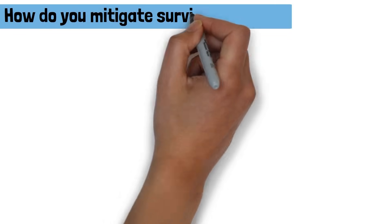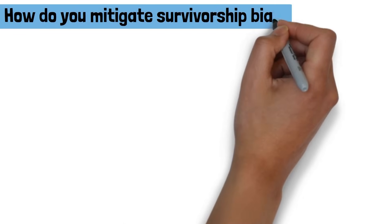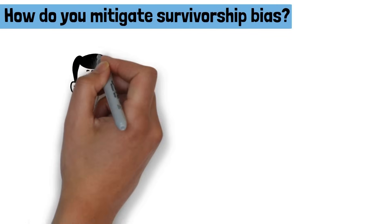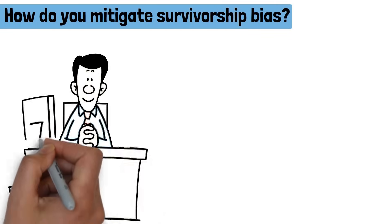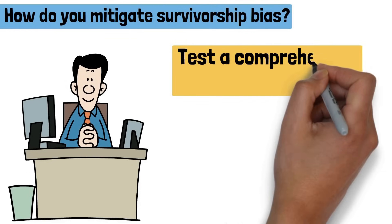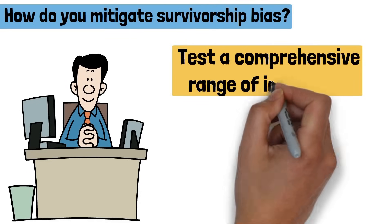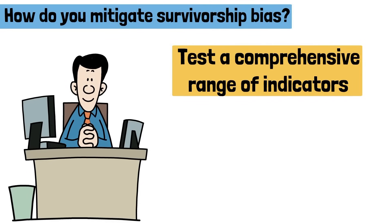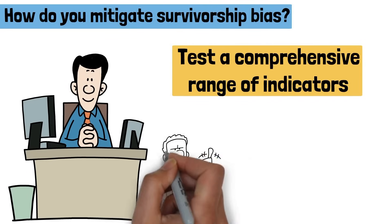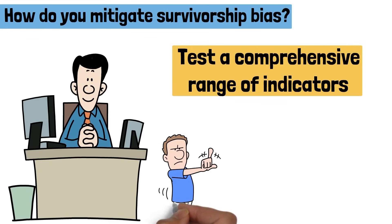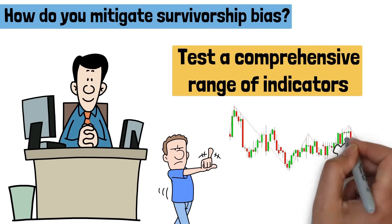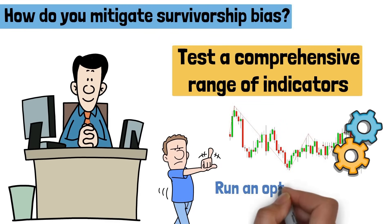How do you mitigate survivorship bias? Here are practical steps to mitigate survivorship bias in your backtesting. Test a comprehensive range of indicators – don't cherry-pick indicators or settings based on preconceived notions. Include a diverse set in your backtesting process.